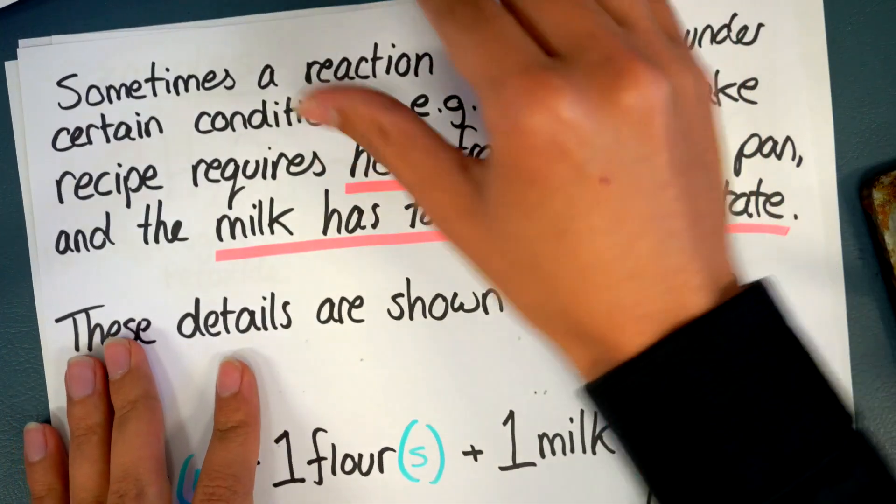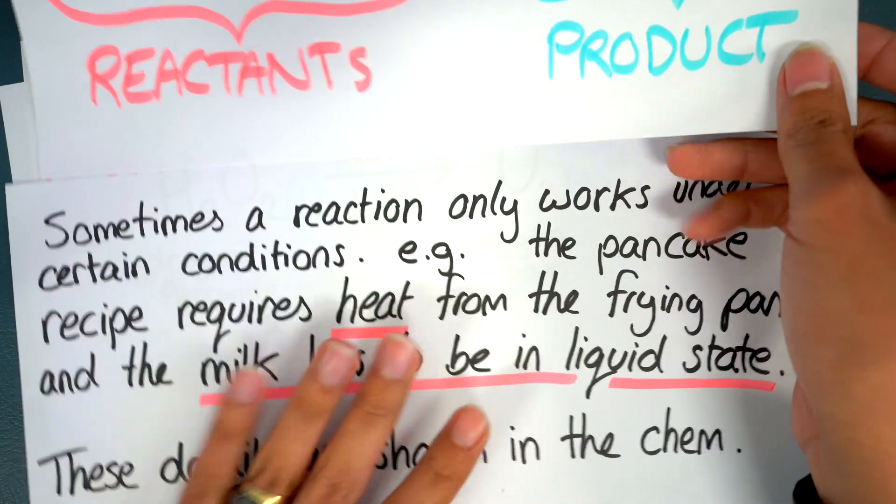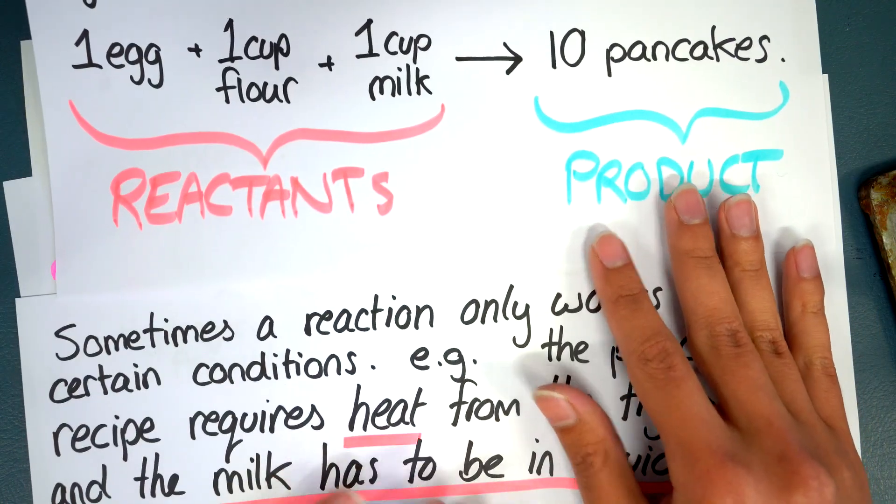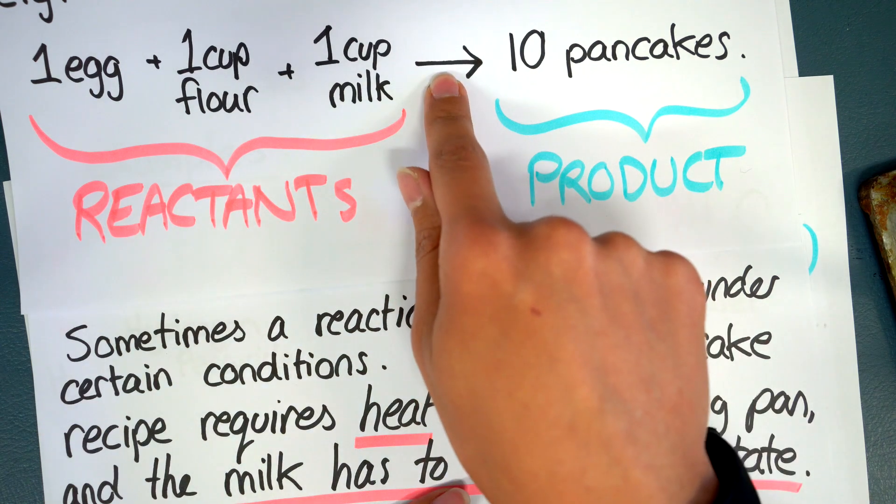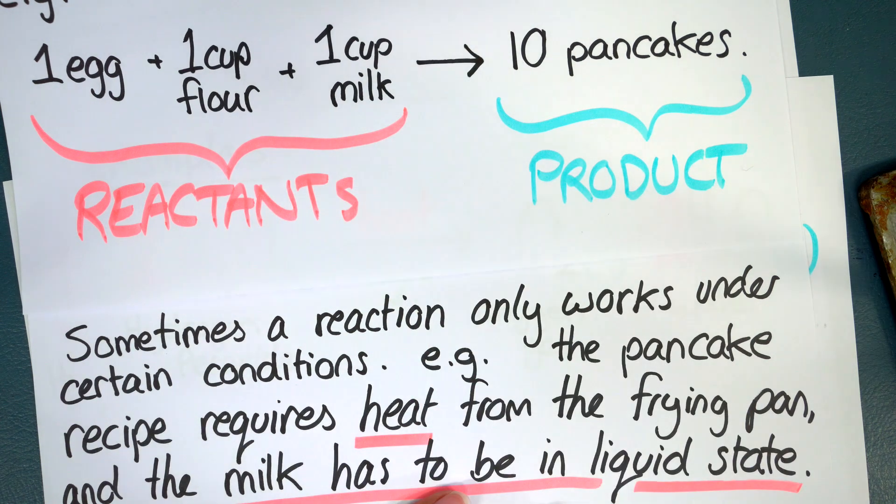So for example if we return back to our pancake recipe, I'll just hold it here above. Okay this pancake recipe is only going to happen if you apply heat to the batter mix. It'll still be batter unless you do so.